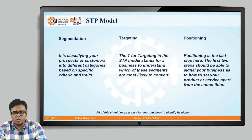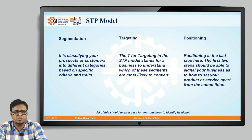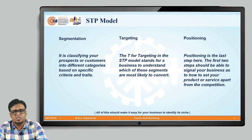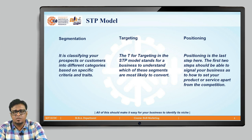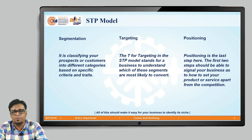Let us go with the STP model. STP stands for Segmentation, Targeting, and Positioning. Segmentation is classifying your prospects or customers into different categories based on specific criteria and traits, which we have seen in the previous video. Targeting is helping the business understand which of the segments are most likely to convert — those will be your targets. Positioning is the last step, where the first two steps signal how to set your product or service apart from your competition.